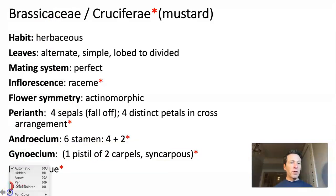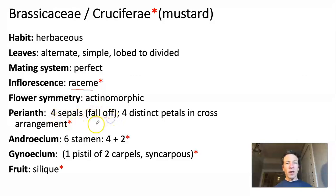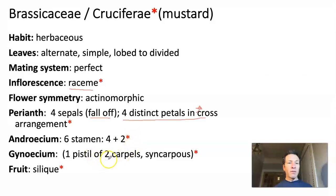Key features of Brassicaceae: know both names. It's herbaceous with alternate, simple, lobed or divided leaves. Flowers are perfect, arranged in a raceme. There are four deciduous sepals and four petals in the shape of a cross. The androecium has four plus two stamens — a key trait. The gynoecium has two carpels with a silique fruit. Lots of distinctive features for this family.